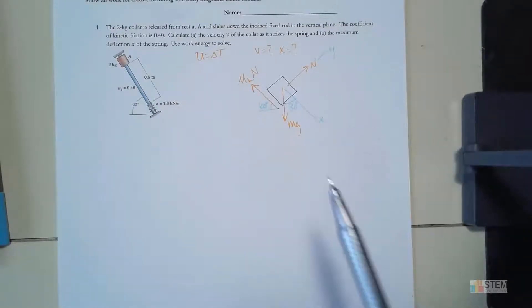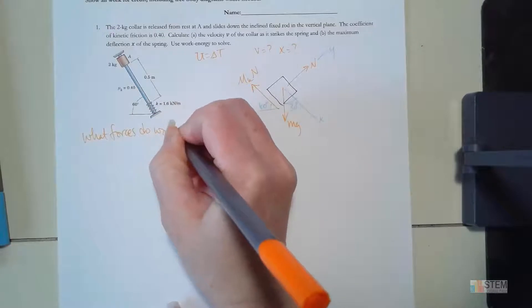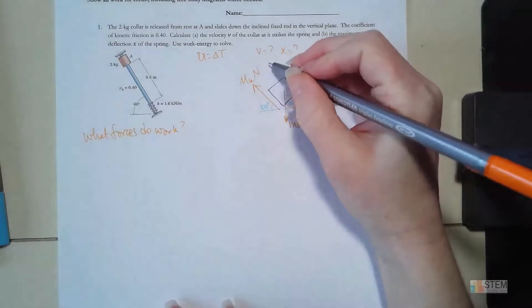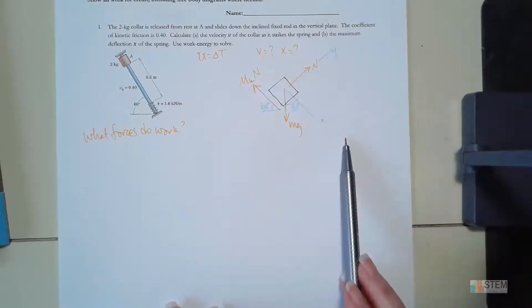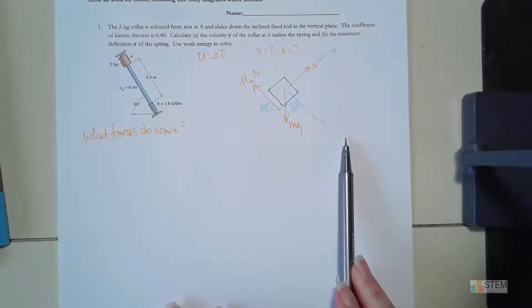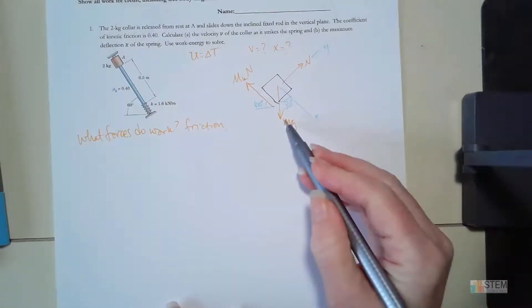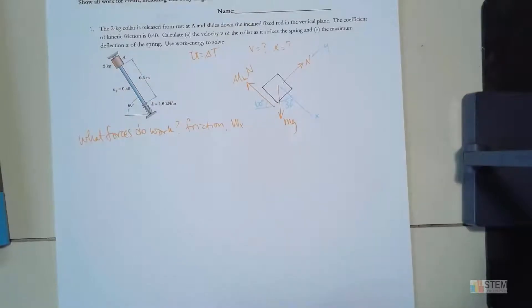Now I need to figure out what forces are going to do work. Remember, in order to have work you have to have a displacement in the same direction as the force — it could be negative, but they have to be along the same axis. Our motion is in the X direction, so I want all forces that have an X component. That means friction is one of them, and then weight also has an X component, so we put Wx for that.